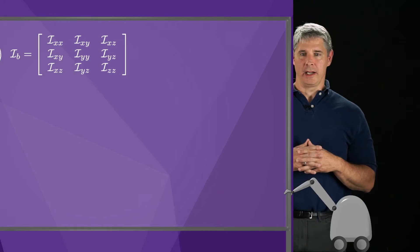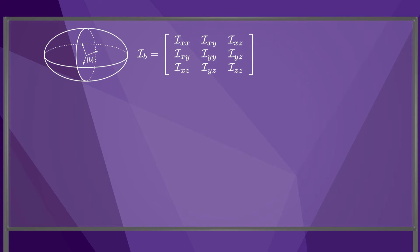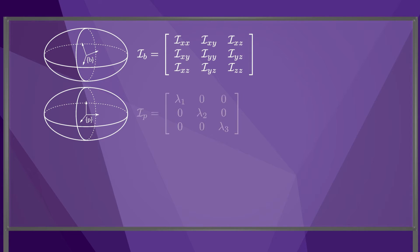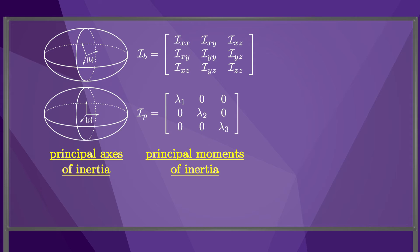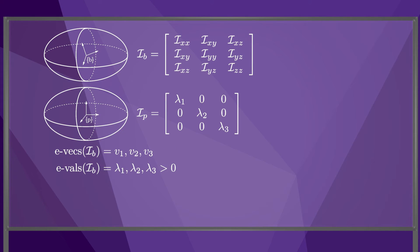Now let's consider a particular rigid body, an ellipsoid, with a frame b at its center of mass and the inertia matrix ib shown here. Consider the same body but with a frame p also at the center of mass with a different orientation. In this frame p, the inertia matrix has a particularly simple form with all off-diagonal elements zero. When the off-diagonal elements are zero, the p-frame coordinate axes are called principal axes of inertia, and the scalar inertias about these axes are called the principal moments of inertia. You can find the principal axes of inertia from the inertia matrix for any frame b at the center of mass by evaluating the eigenvectors and eigenvalues of ib. The principal axes of inertia are aligned with the eigenvectors, expressed in the b-frame, and the principal moments of inertia are the eigenvalues.